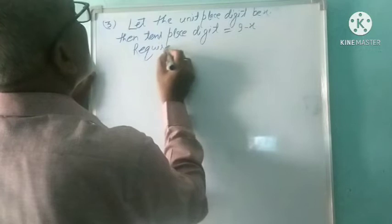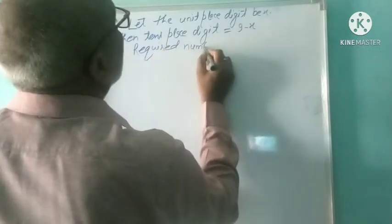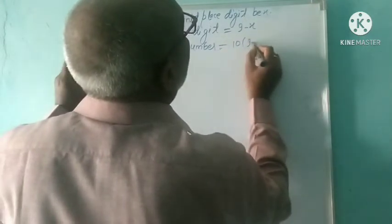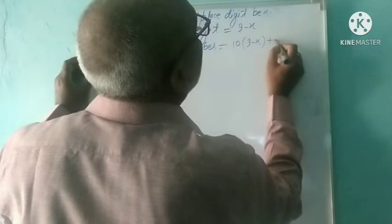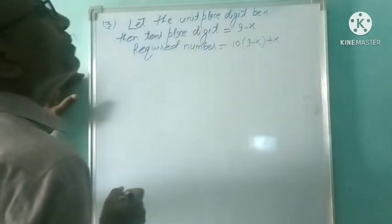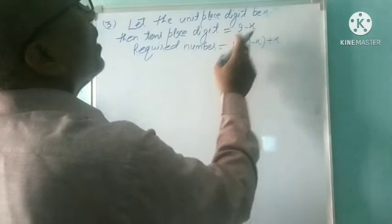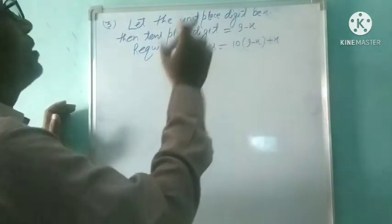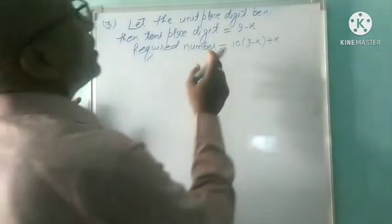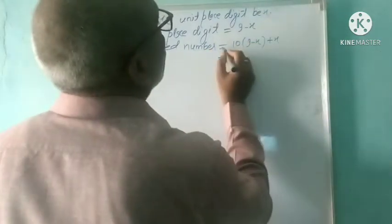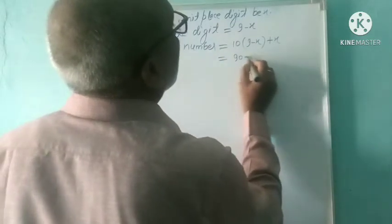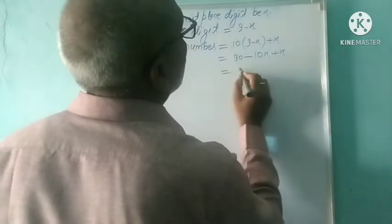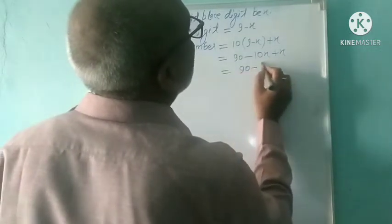The required number is equal to 10 bracket 9 minus x plus x. The tens place digit is multiplied by 10 and the units place digit is multiplied by 1, and when you add these two digits you get the number. So the required number equals 90 minus 10x plus x, which is equal to 90 minus 9x.